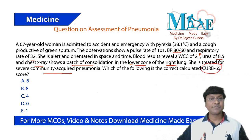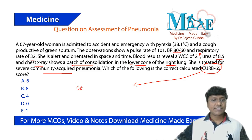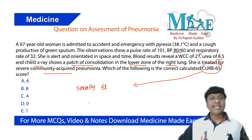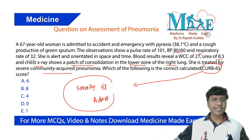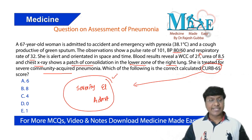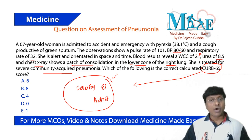First of all, you should know what CURB-65 is. CURB-65 is a severity score which assesses the severity of pneumonia and also predicts where to admit the patient — that is the importance of the CURB-65 score.